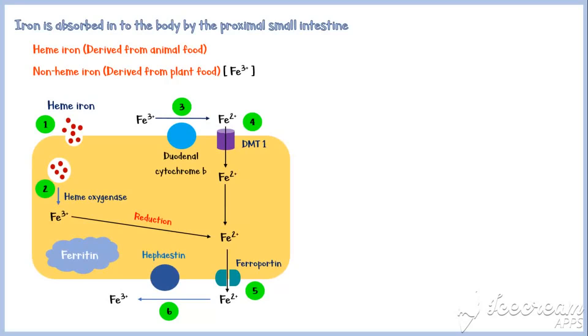Then ferric enters into the circulation and binds to transferrin, which is the major iron transporter in the plasma. Excess iron is stored within the enterocyte in the form of ferritin, as indicated by number 7.